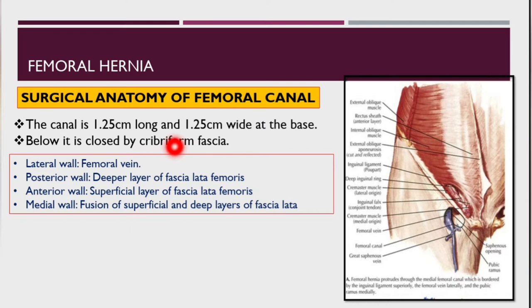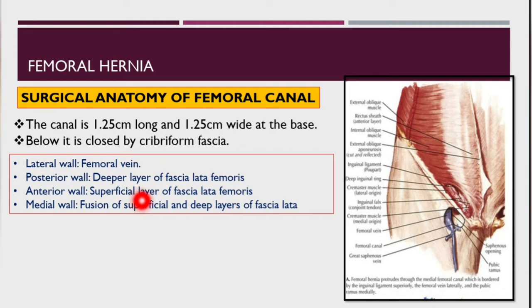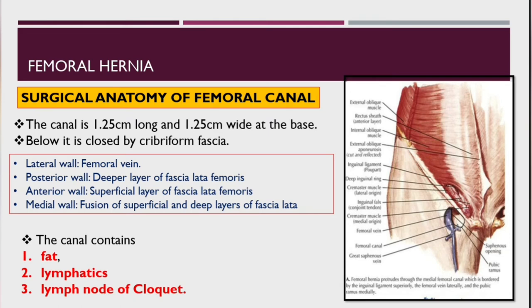The femoral ring is the inlet of this canal; the outlet is the fossa ovalis for the great saphenous vein. The canal has the following walls: the lateral wall is formed by the femoral vein; the posterior wall is formed by the deeper layer of fascia lata femoris; the anterior wall is formed by the superficial layer of fascia lata femoris. The canal normally contains fat, lymphatics, and the lymph node of Cloquet or Rosenmuller.